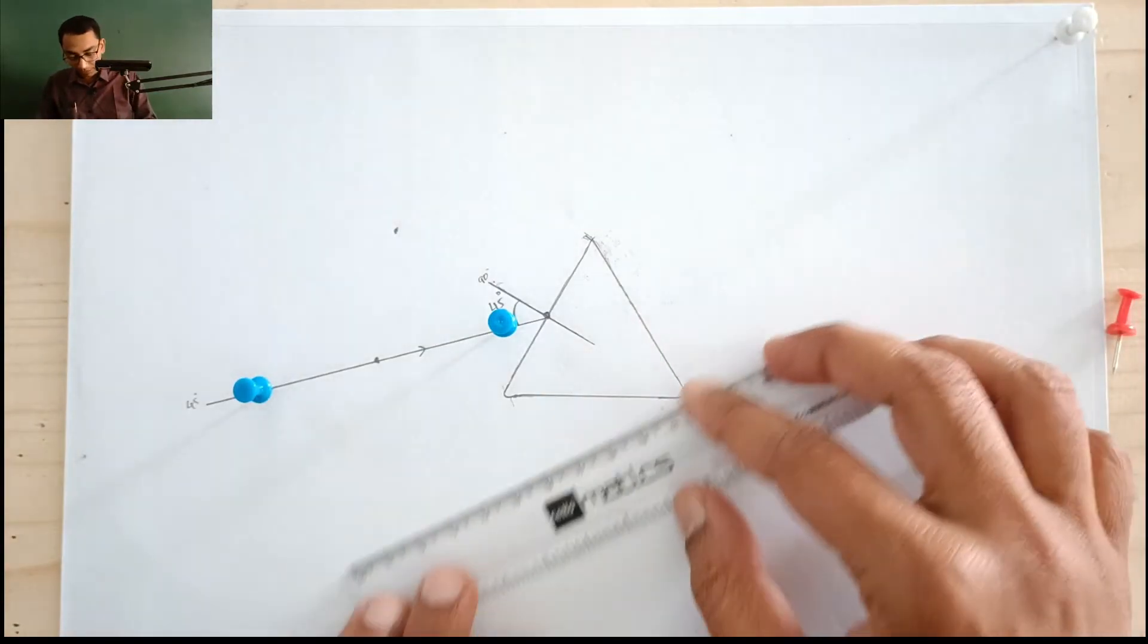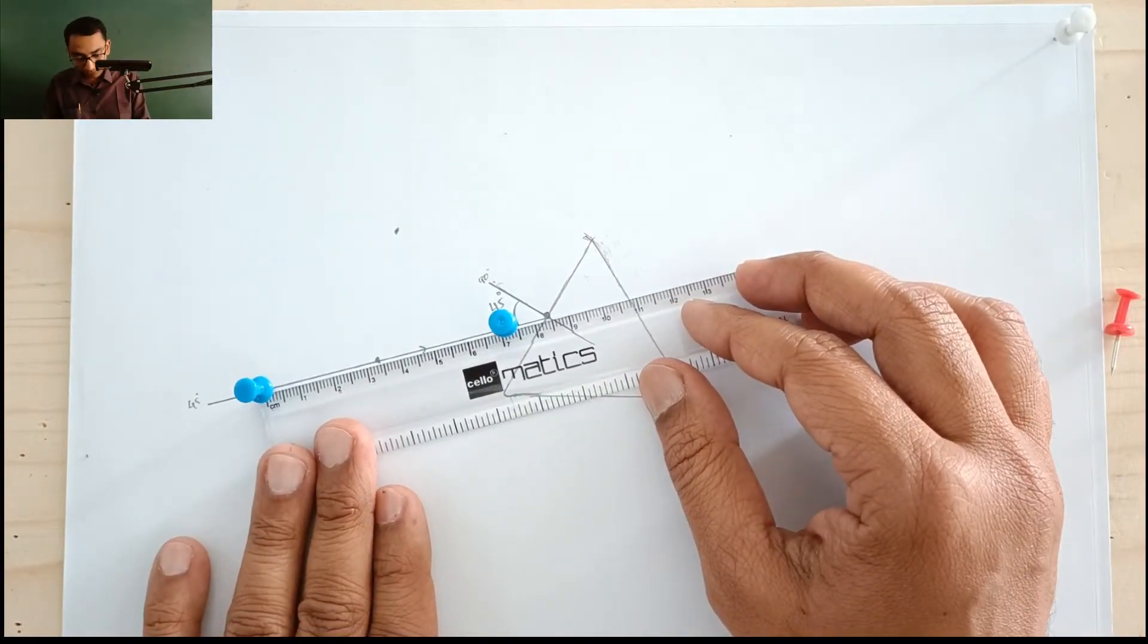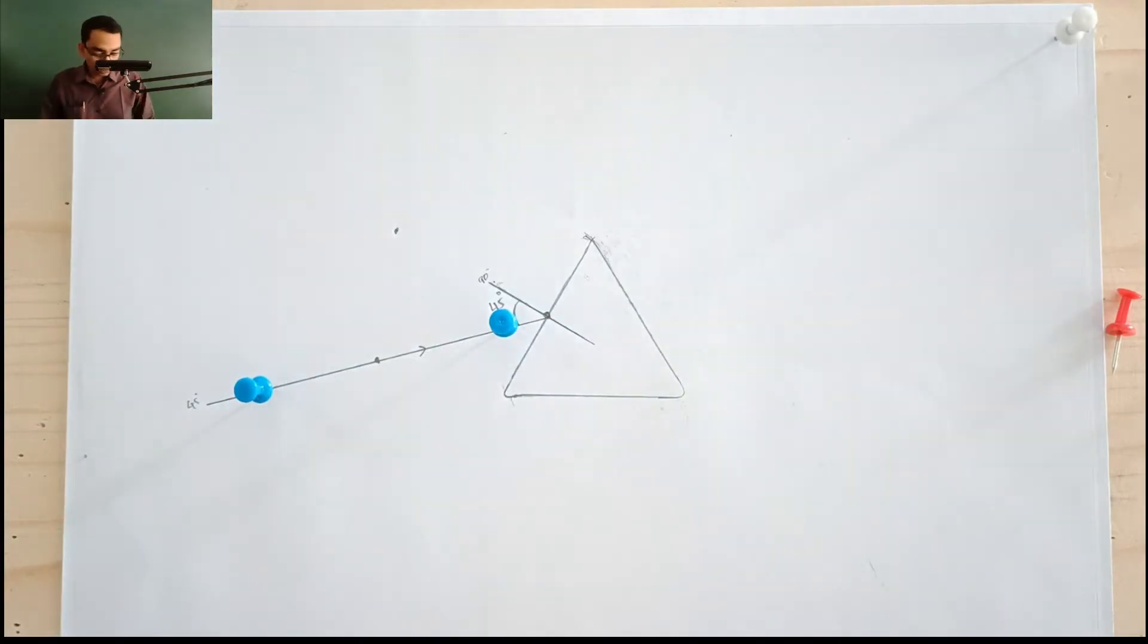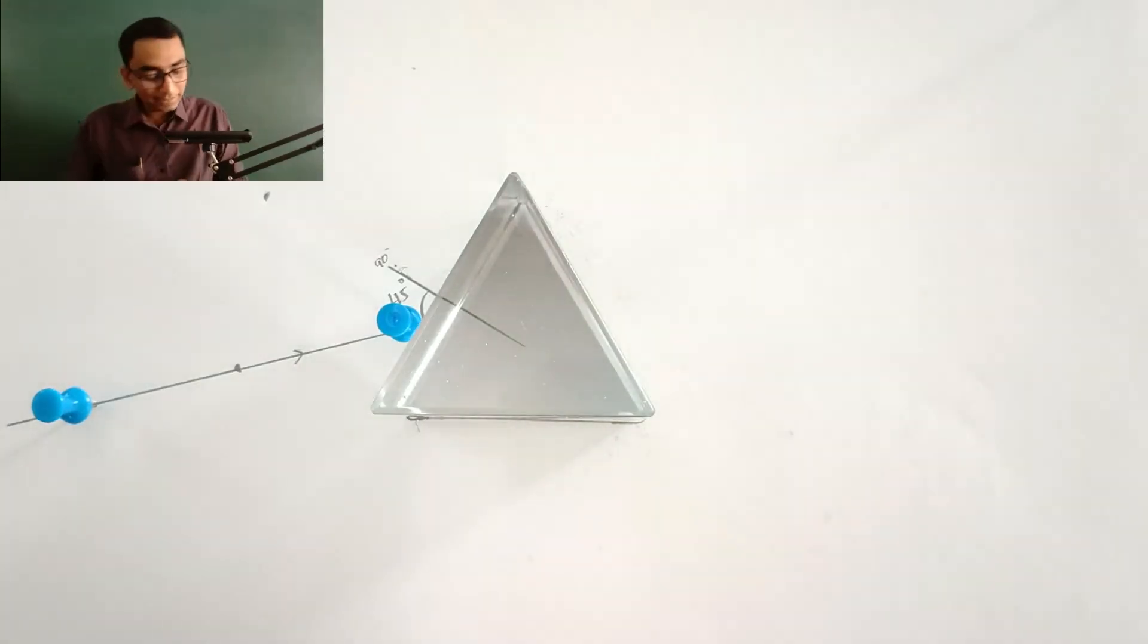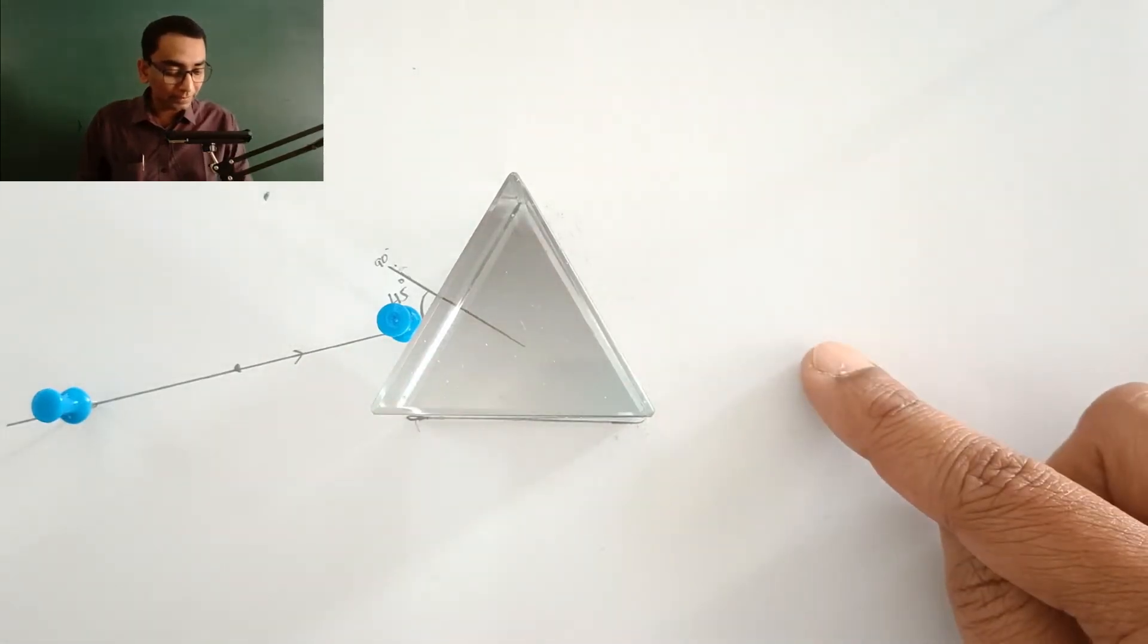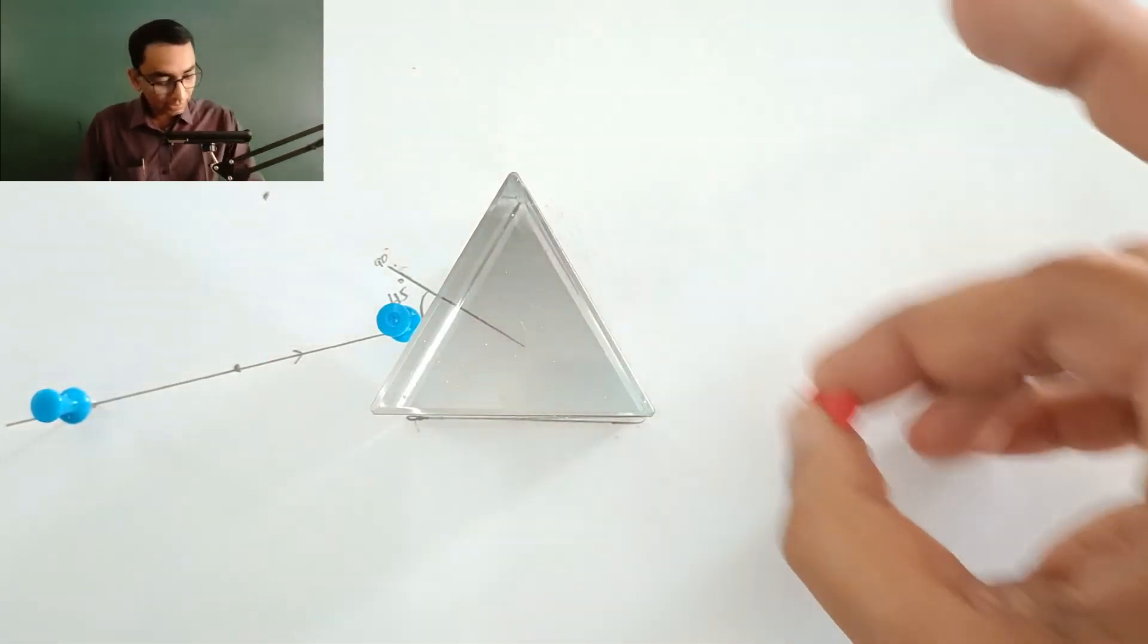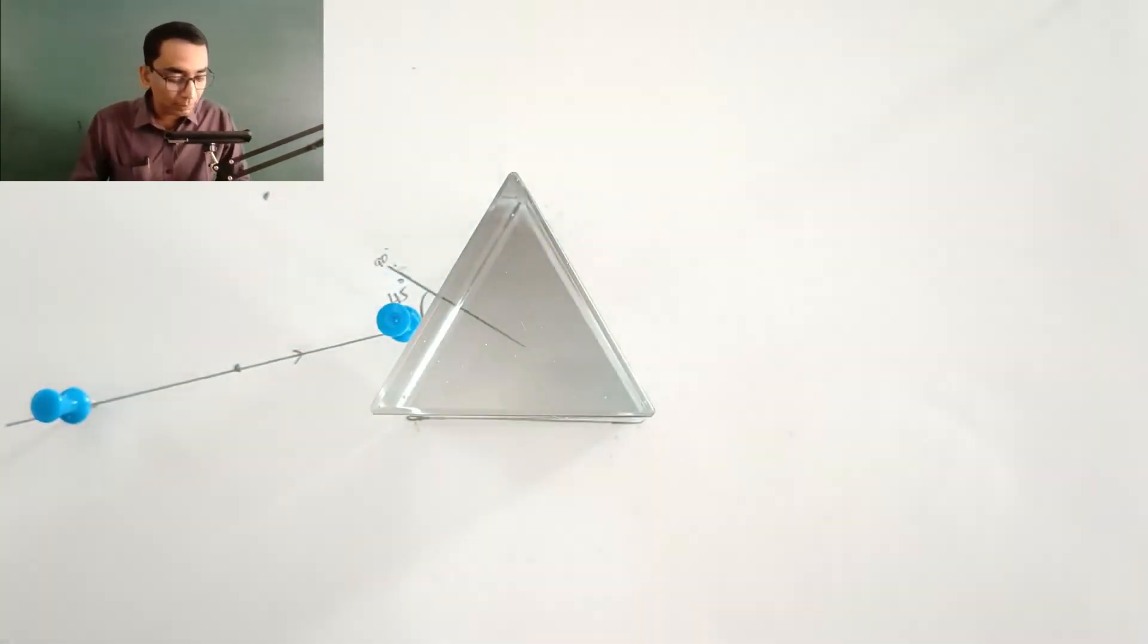So now approximately the distance is more than 5 centimeters, roughly 6.6 to 7 centimeters. So we are good to go. Now I am going to place the prism back at the traced location and then I am going to see the images of these two pins from this side. And then I am going to place another two pins such that these two pins and the images of these two pins appear in a perfect straight line.